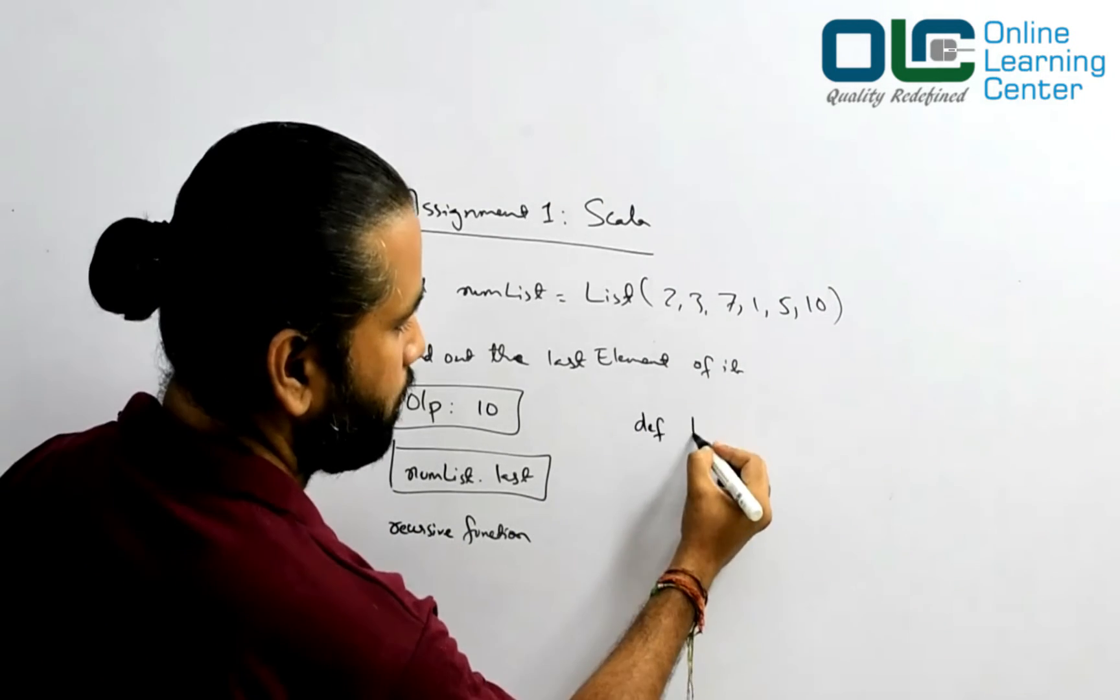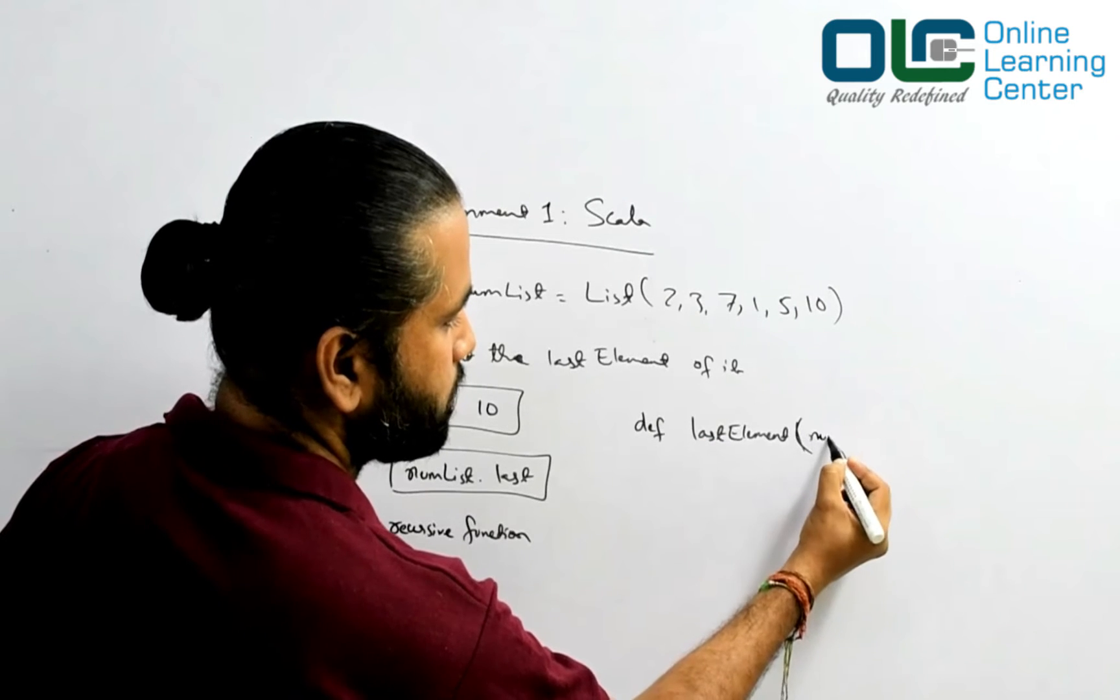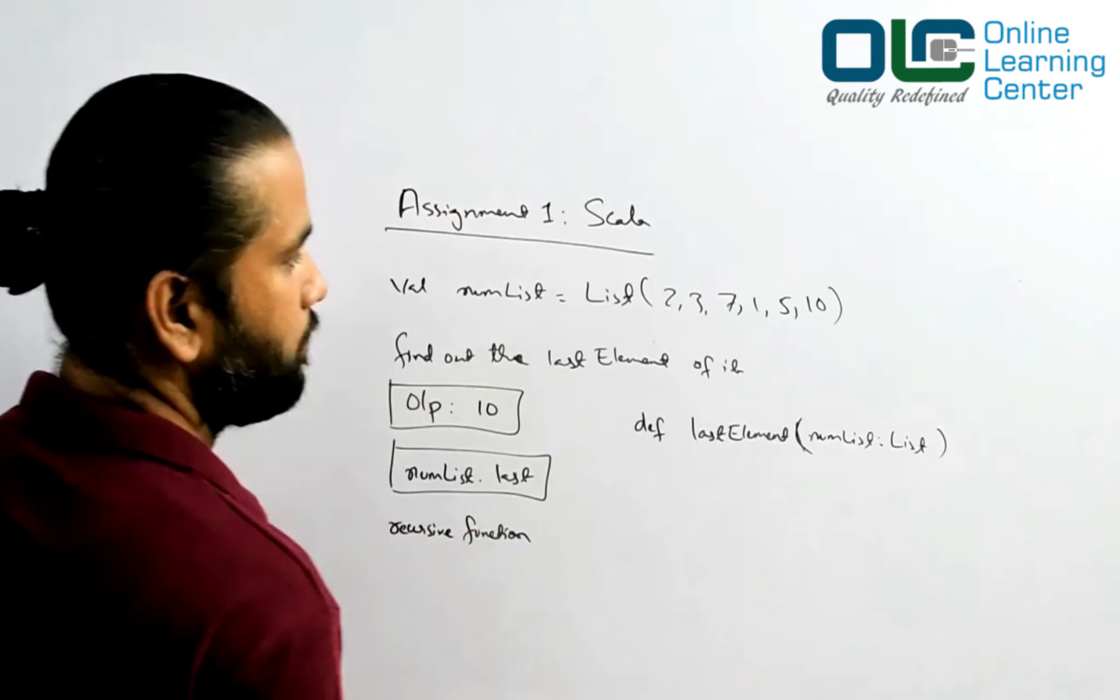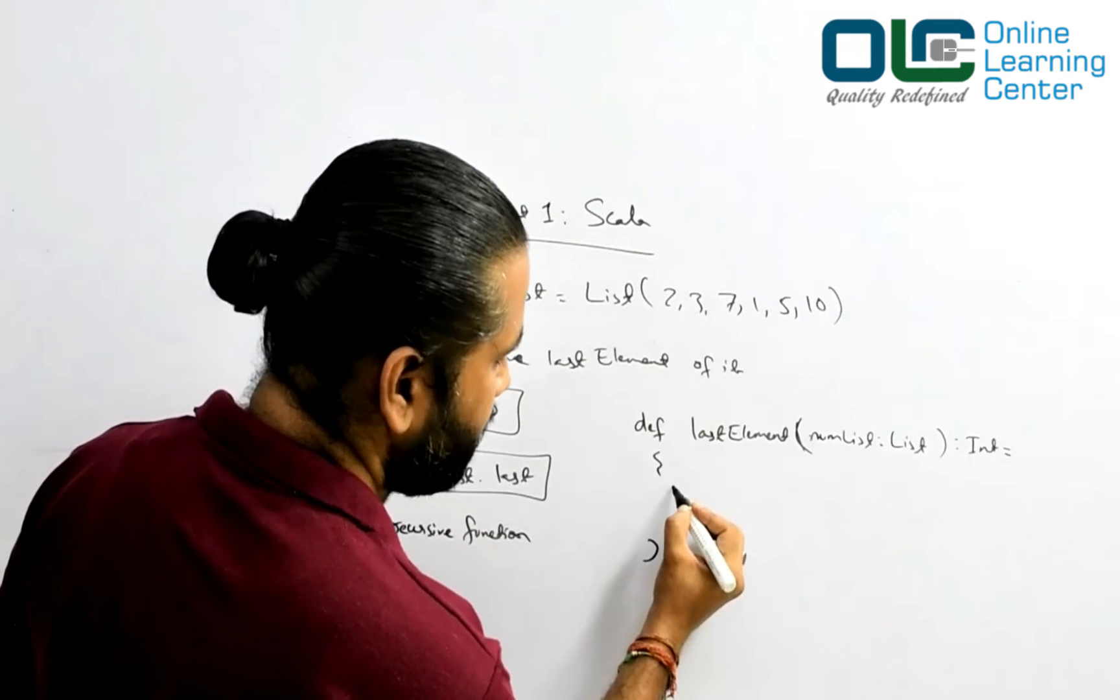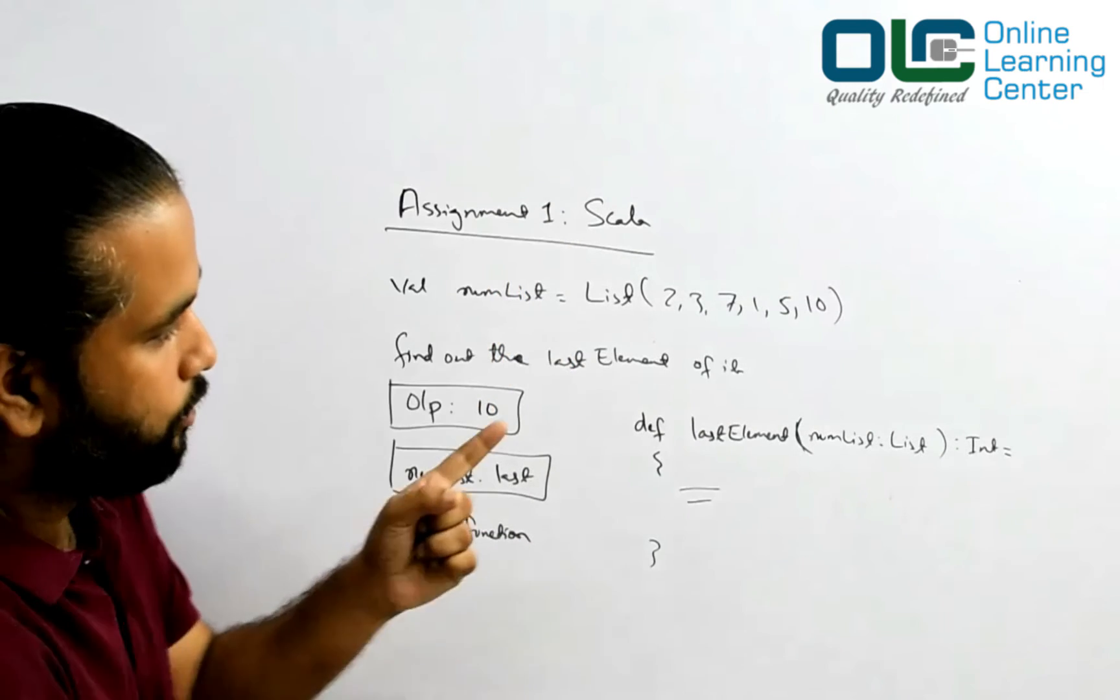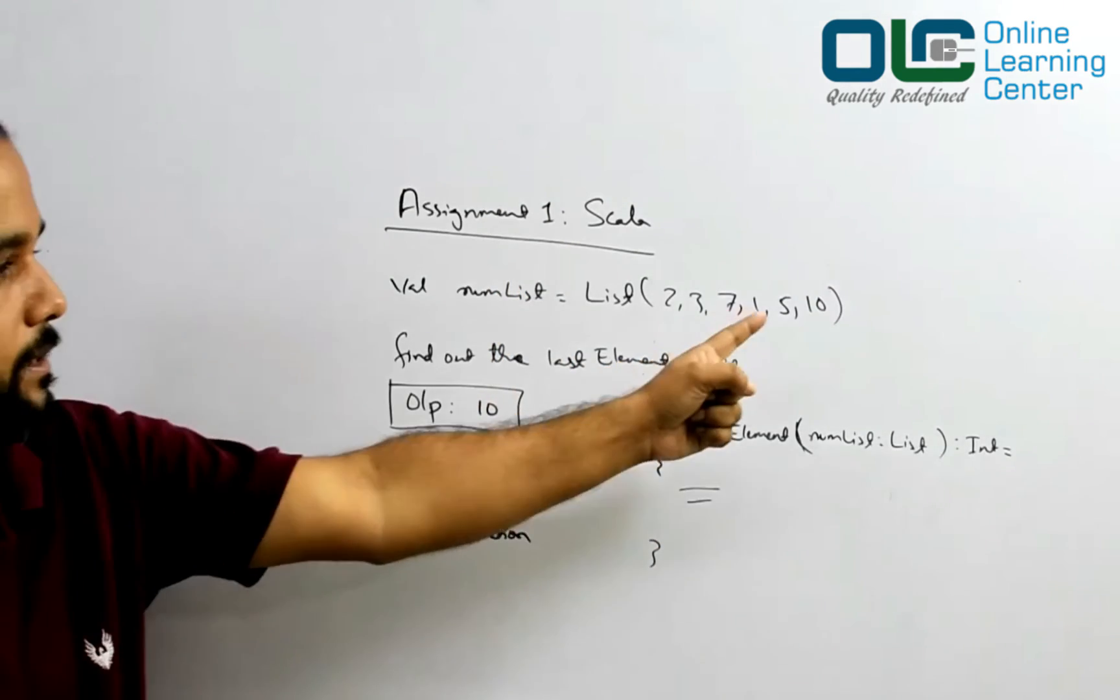You should write a function like this: define lastElement that would take a list of List type, and what you're supposed to return back is an integer. Here you write your recursive call and your call should return me back the number. When you print this number, you should get 10 as a result of the last element.